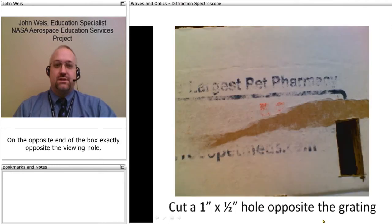On the opposite end of the box, exactly opposite the viewing hole, you'll cut out a 1 inch by 1 1⁄2 inch hole.